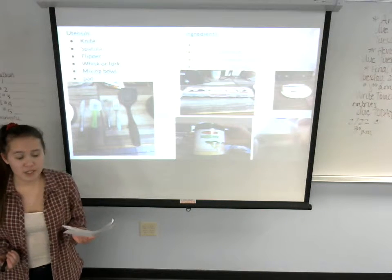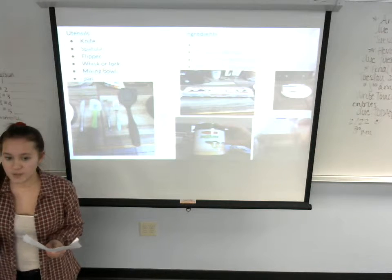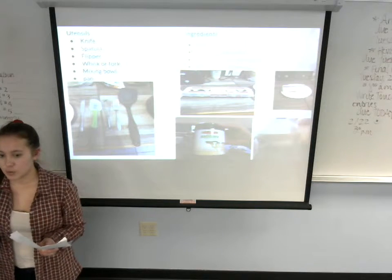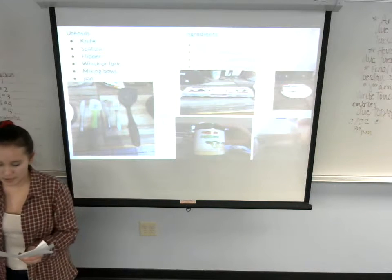For the ingredients, you're going to need one egg for sunny side up and sunny side down. And then depending on how much you want to eat or make, you can have more than one per scrambled eggs.